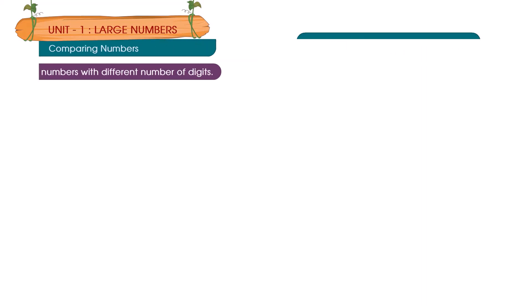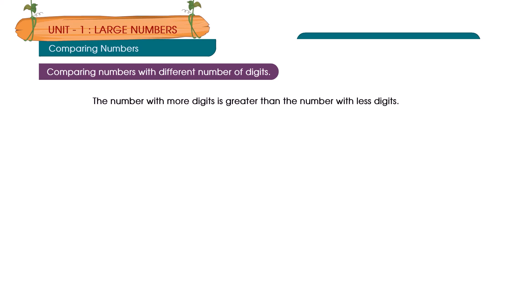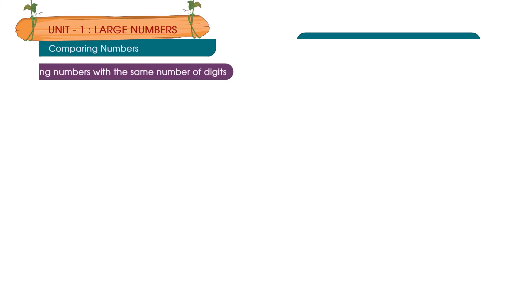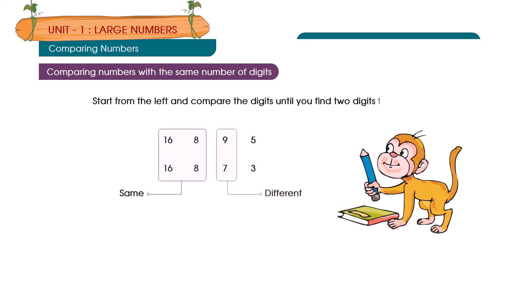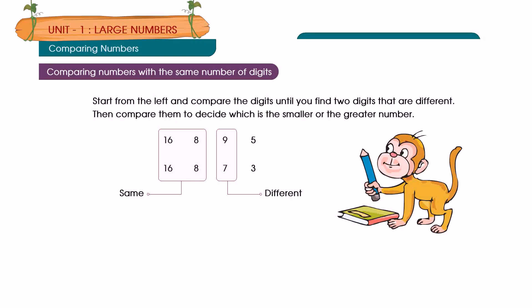Comparing numbers. Comparing numbers with different number of digits: the number with more digits is greater than the number with fewer digits. For example, 32,486 is greater than 9,285 — a 5-digit number is greater than a 4-digit number. Comparing numbers with the same number of digits: start from the left and compare digits until you find two that are different. Then compare them to decide which is smaller or greater. For example, 16,895 is greater than 16,873.